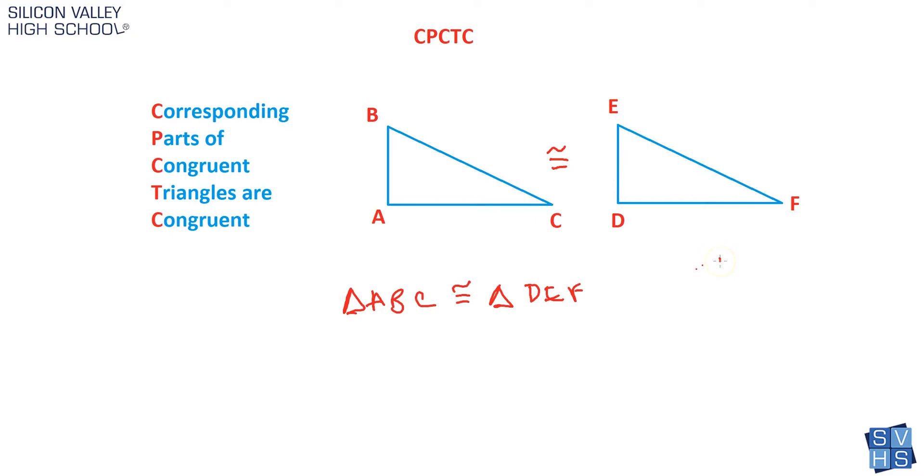Same thing with the actual side lengths. I could say side AB, which is this side here, is congruent to side DE, which is this side here. This is the best cheat sheet ever. Just because we have to write them in order, we can make assumptions about which are corresponding and thus which are congruent.